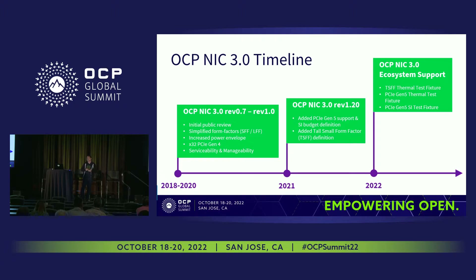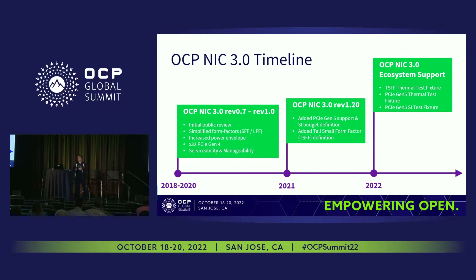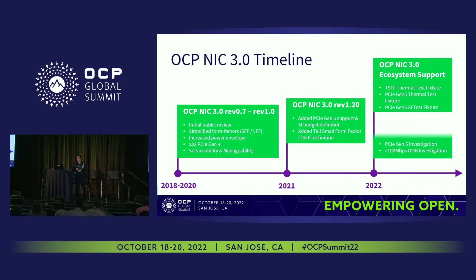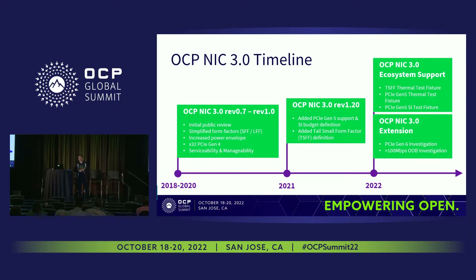This year, we largely focused on how to support two new additions — PCIe Gen5 — through thermal test fixture modification and SI test fixture development, as well as the tall small form factor, which our thermal test fixture will now support. We also looked into what's beyond PCIe Gen5, specifically PCIe Gen6 and what it takes to get there, as well as improvements to out-of-band speed.